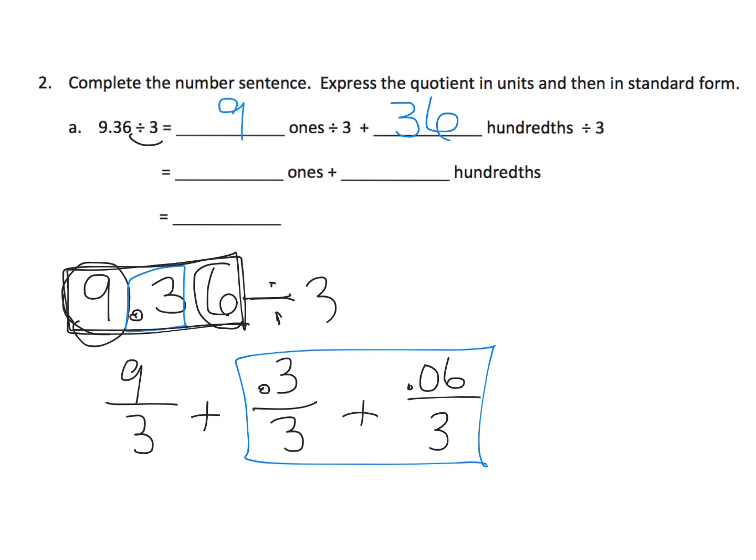Right here, 9 ones divided by 3 gives us 3 ones. And then 36 hundredths divided by 3, so 36 divided by 3 is 12, so that's going to be 12 hundredths. And then 3 ones plus 12 hundredths is going to look like 3.12. That's their answer. They're doing this by partial quotients.